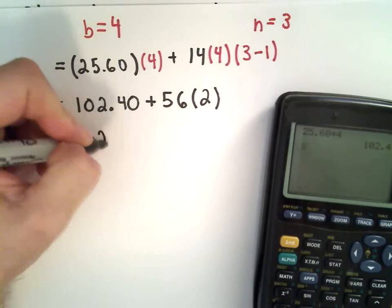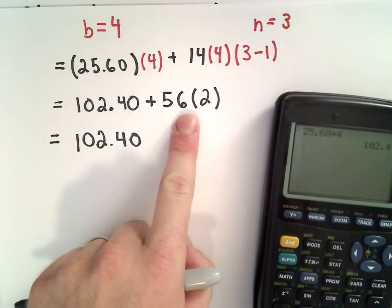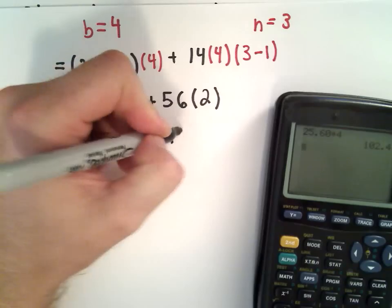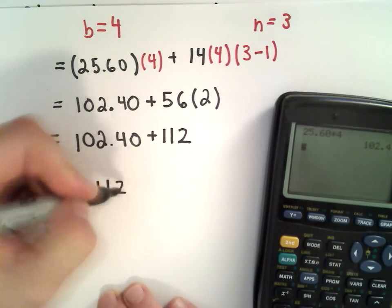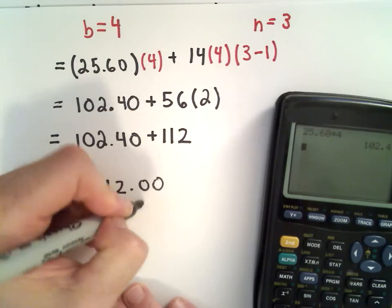So now we just keep simplifying. 102.40. Well, we have to do our multiplication. So 56 multiplied by 2 is going to give us 112. And if we do 112 plus 102.40,